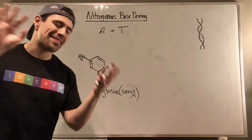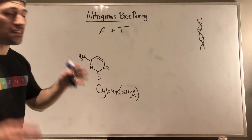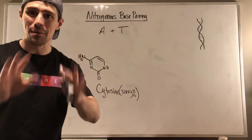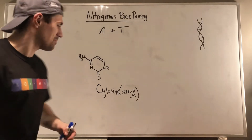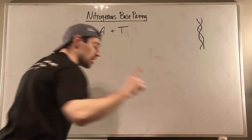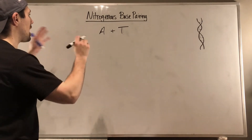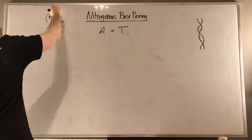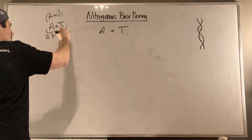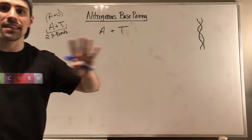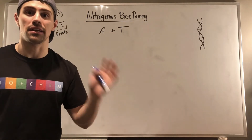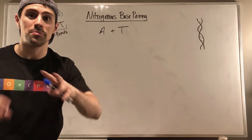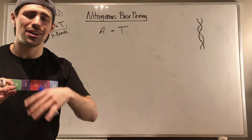G and C sport three hydrogen bonds, while A and T as well as A and U only sport two hydrogen bonds. It's not a competition — it's just that in all combinations of nitrogenous base pairing, A and T's best match gives two hydrogen bonds based on their structures. They tested the dating pool, and the best they could do was find each other — two hydrogen bonds, living happily ever after.